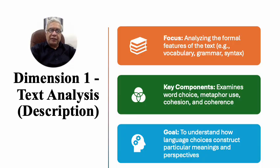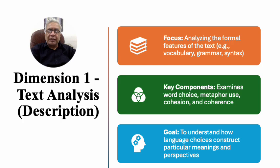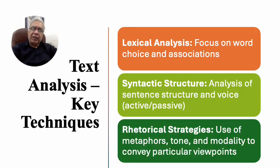Dimension one is textual analysis or text analysis, which focuses on the formal features of the text. The text is analyzed to see what features it contains — the vocabulary, the type of grammar, and how syntax has been used. The key component of this dimension is that it examines word choices: how and why words have been used, whether there are similes or metaphors and why, and whether cohesion and coherence are present. The purpose is to understand language choices and how they construct a particular type of meaning.